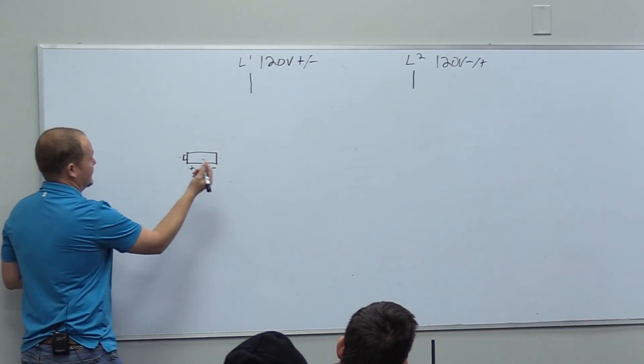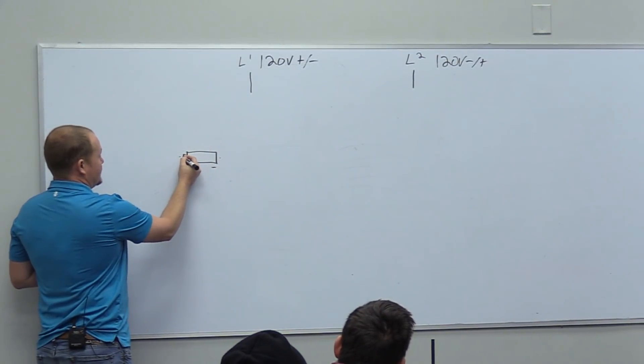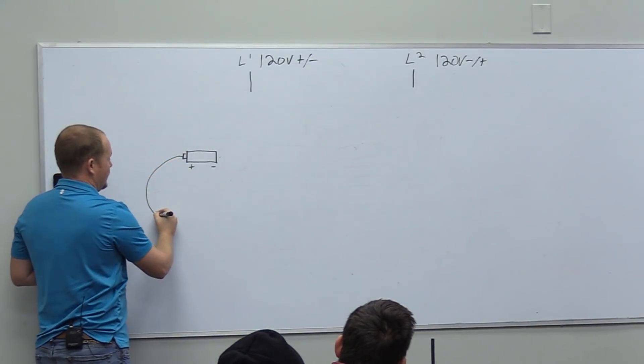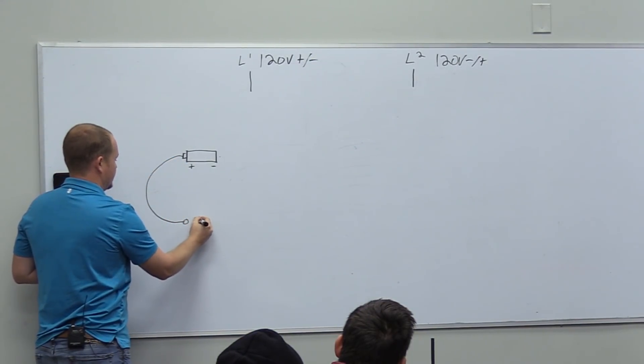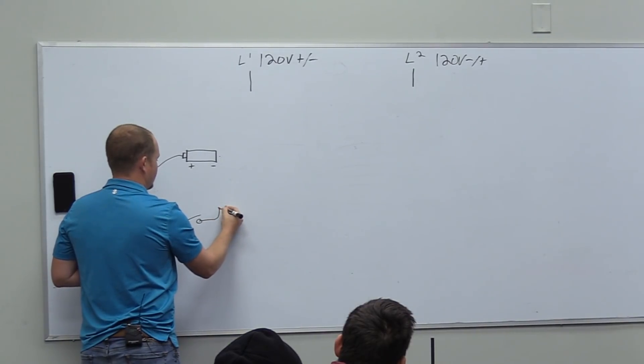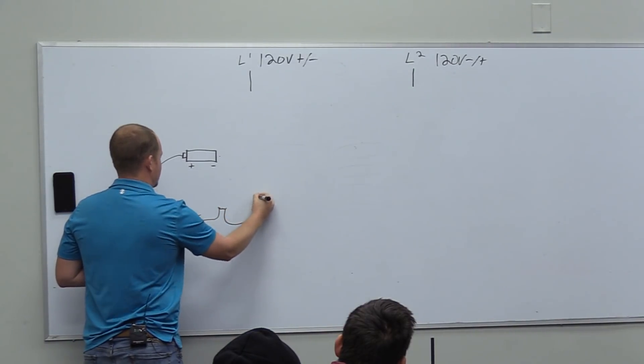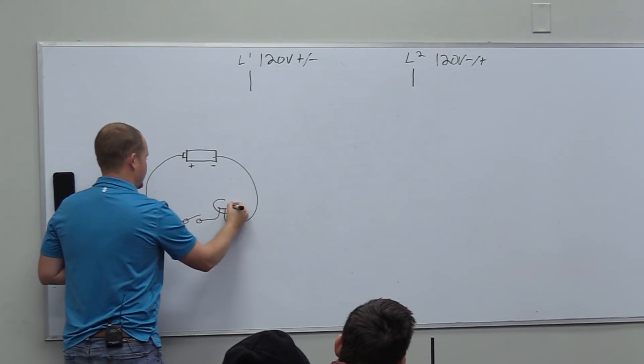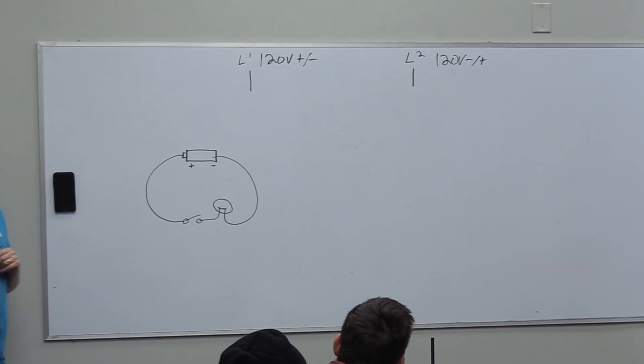We go out of one side of the battery, we can go through a switch, and then we can go through, say, a light bulb. That is a basic electrical circuit.